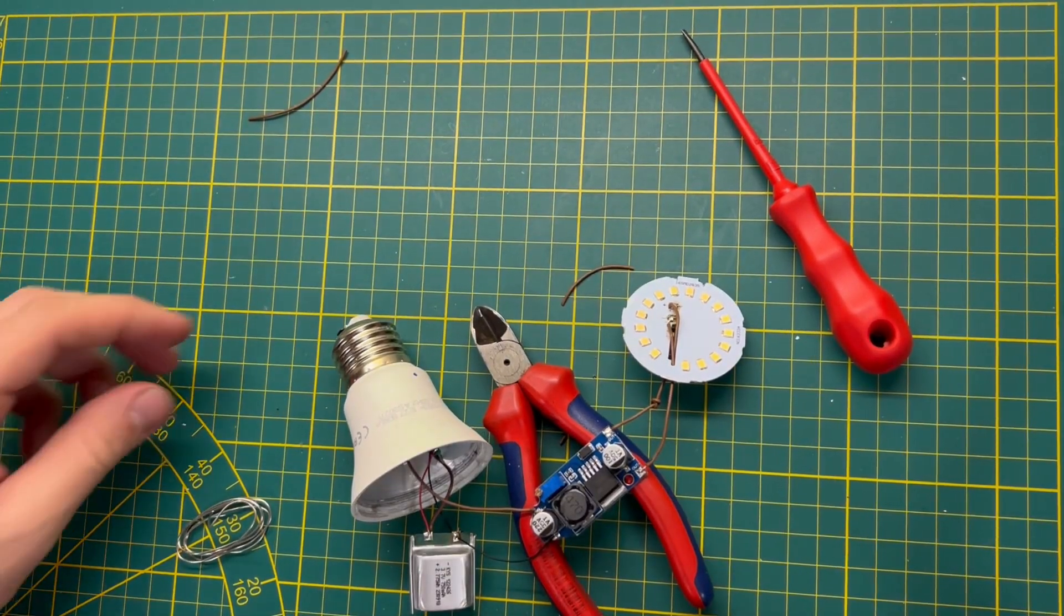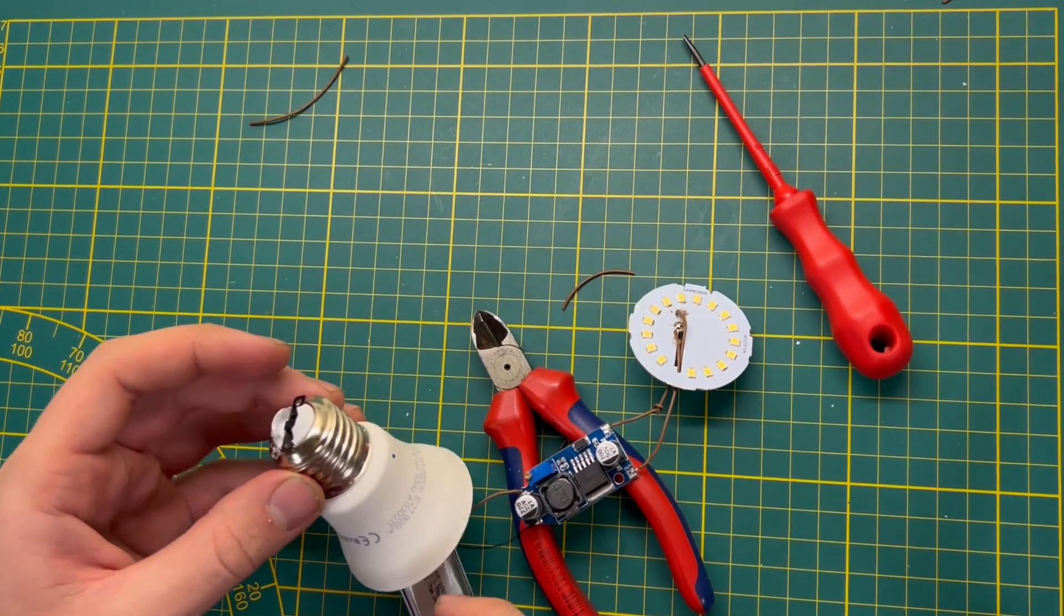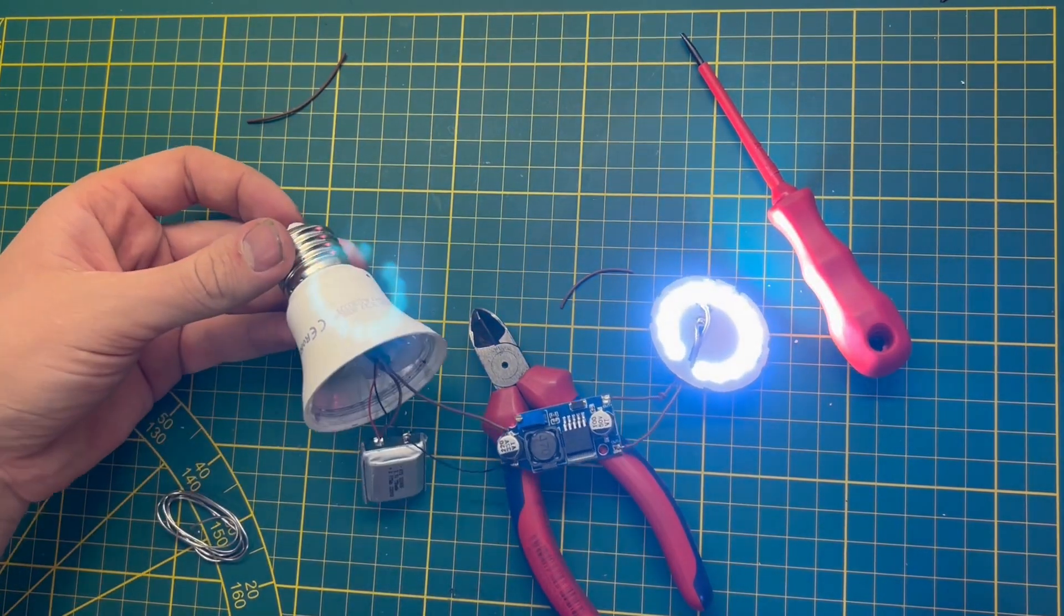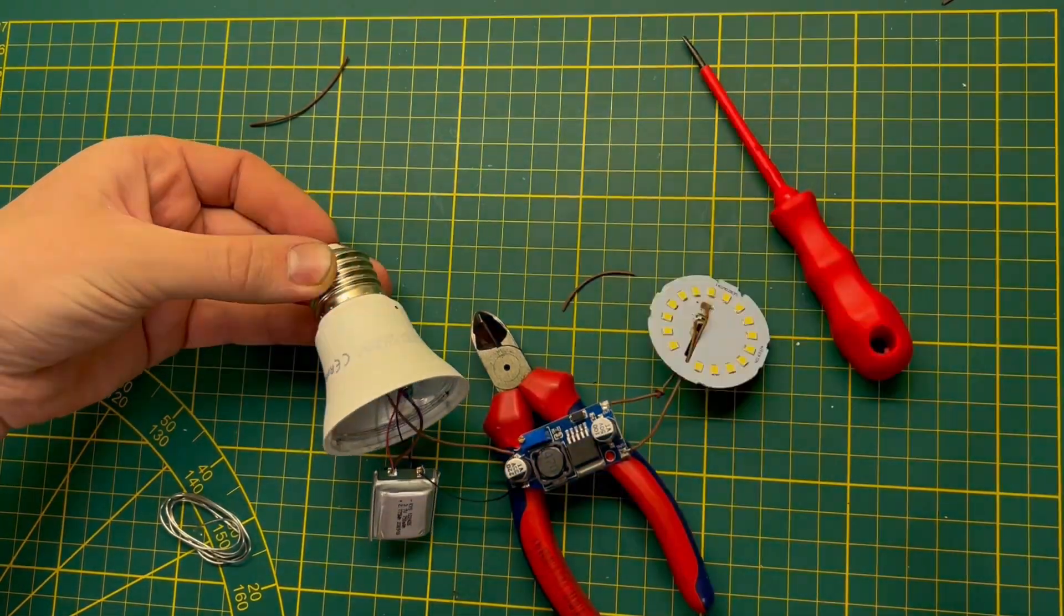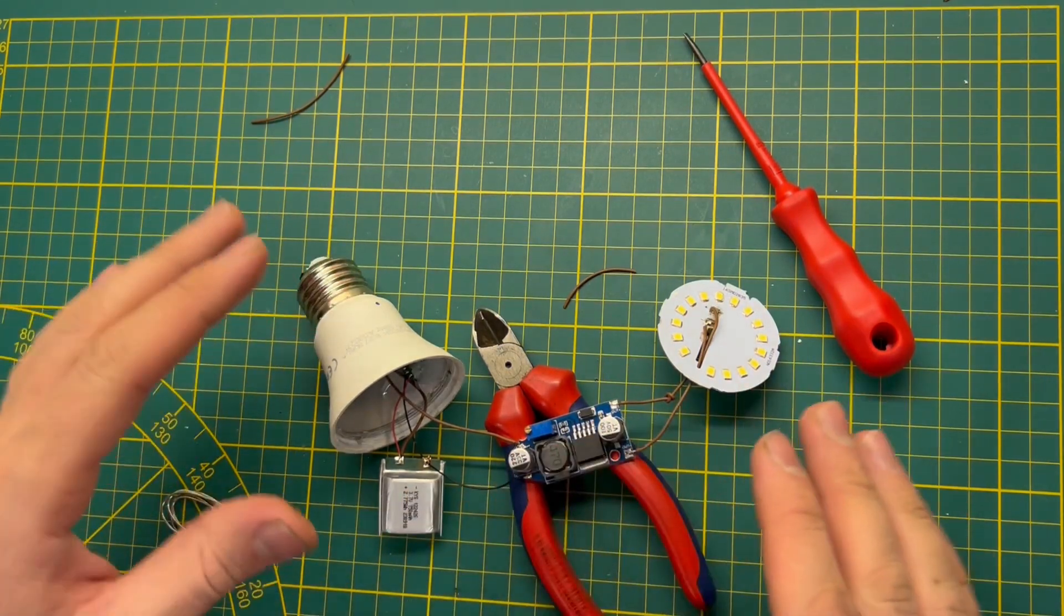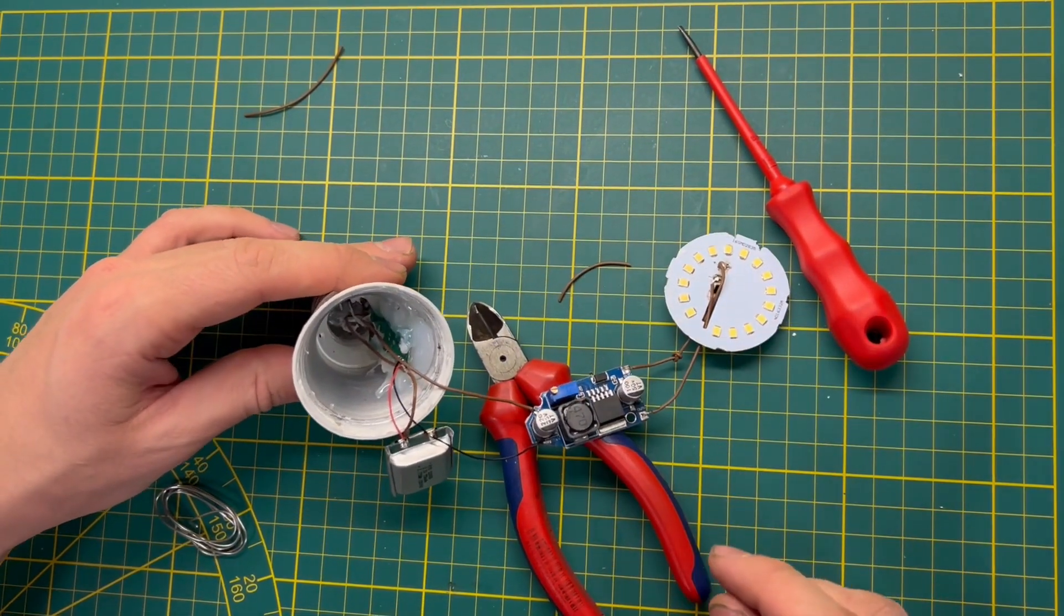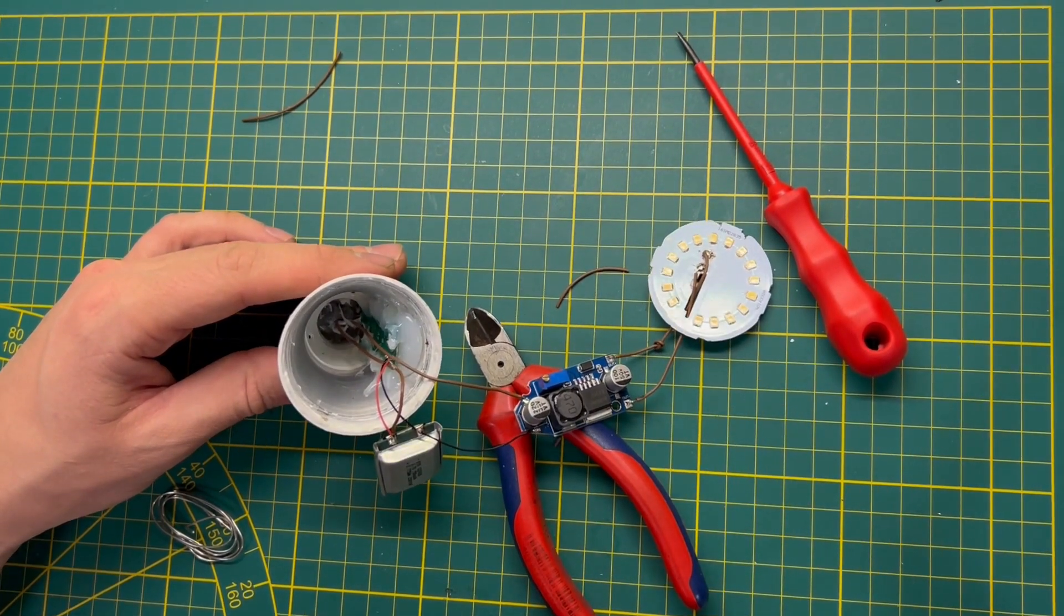Okay, it's connected. Now we can try to make the first test with turning on our switch and our lamp is working. Now we have to try to isolate everything and assemble inside.